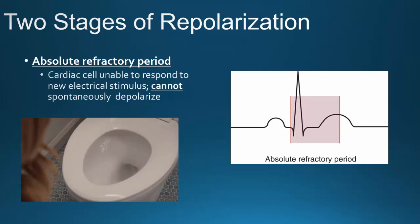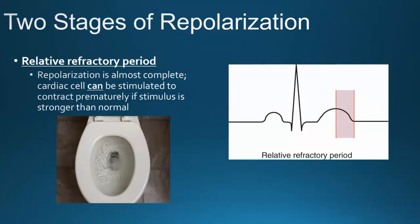Think about the two stages of repolarization like a toilet. If you flush a toilet and immediately try to flush again while it's still flushing, you can't create a full flush — during the absolute refractory period, that's like jiggling the handle right after flushing with no result. During the relative refractory period, it's like the bowl being halfway filled — you can jiggle the handle and create a flush, but it won't be a full flush. The same applies to the heart: if a stimulus is received during the relative refractory period, the cell will contract, but it won't be a good contraction.